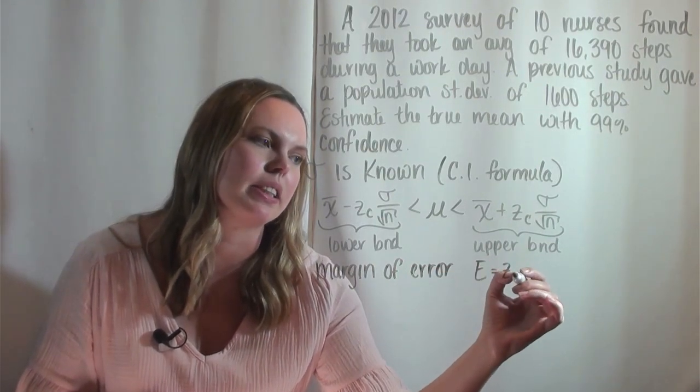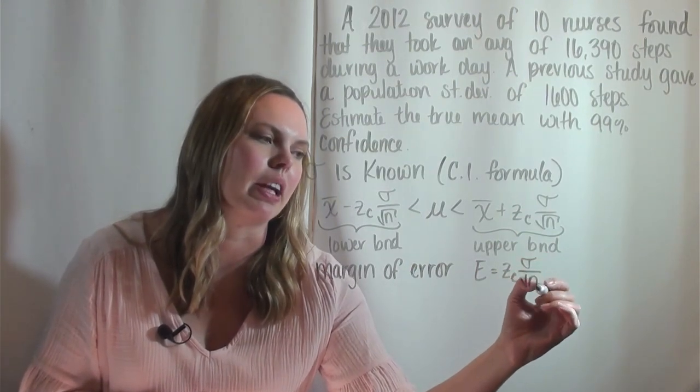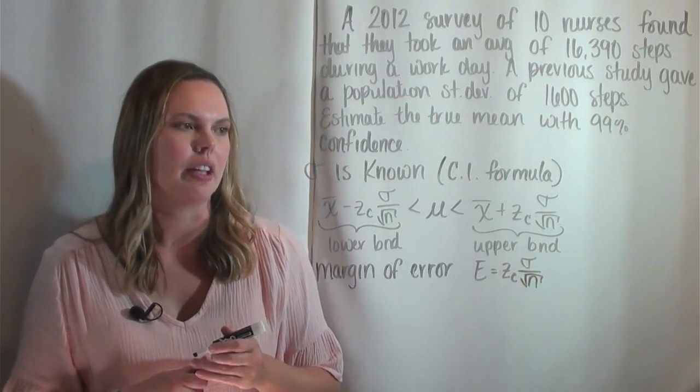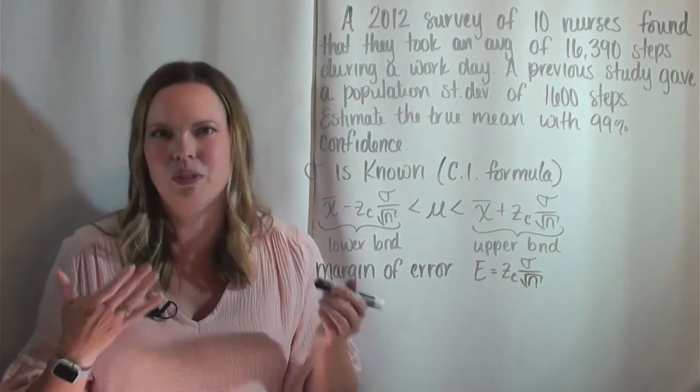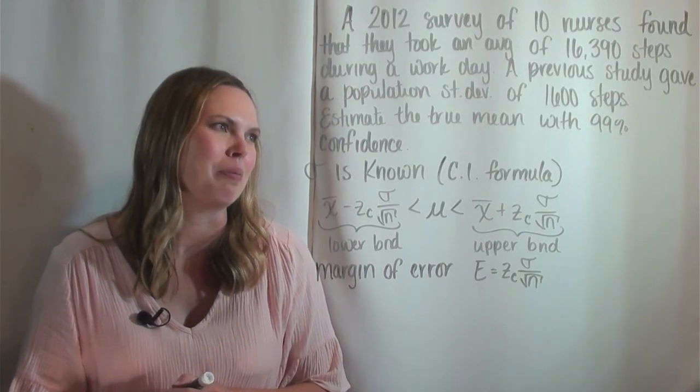Usually indicated with an uppercase E. And it's that z_c, which is a critical value, times sigma over the square root of n. So sometimes that's asked for as well, and we'll find it here as we go through this problem.